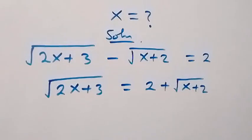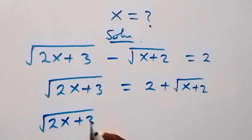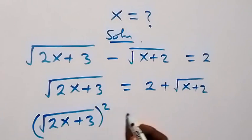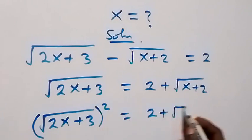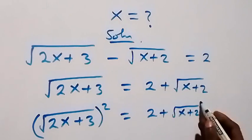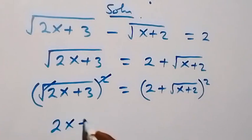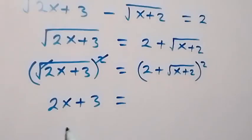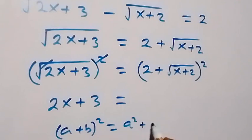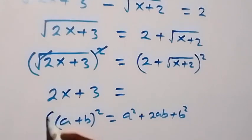From here, we take the square on both sides. On the left side we have square root of 2x plus 3, all squared, and on the right side we have 2 plus square root of x plus 2, all squared. We will apply the identity: when we have (a + b) squared, this gives us a squared plus 2ab plus b squared.